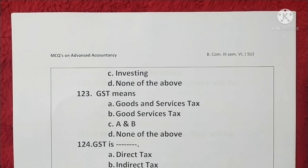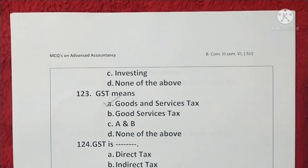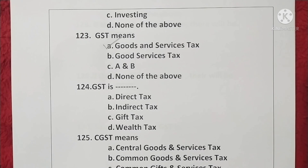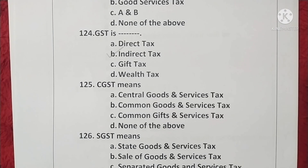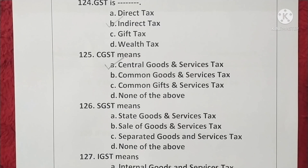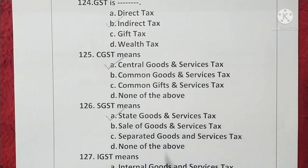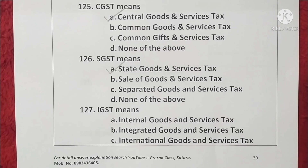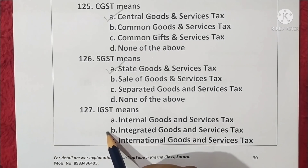Question 123. GST means Goods and Services Tax. Option A is correct. Question 124. GST is an indirect tax. Option B is correct. Question 125. CGST means Central Goods and Services Tax. Option A is correct. Question 126. SGST means State Goods and Services Tax. Option A is correct. Question 127. IGST means Integrated Goods and Services Tax. Option B is correct.